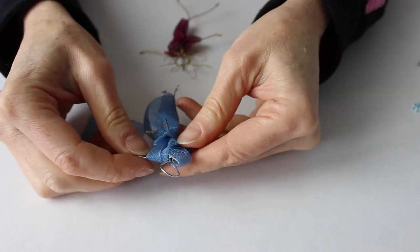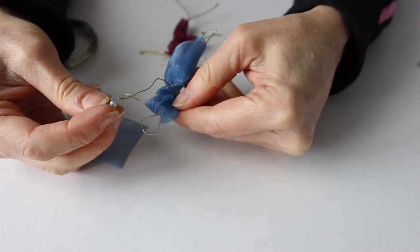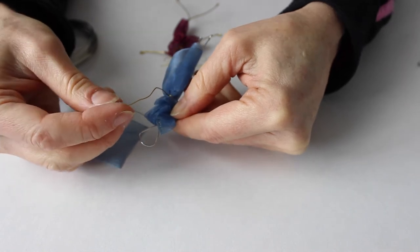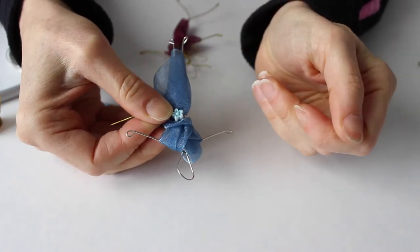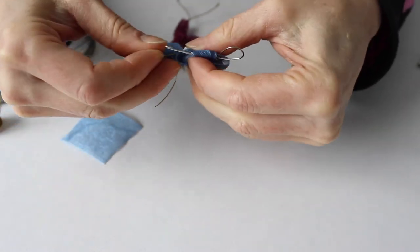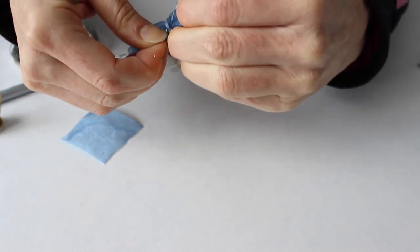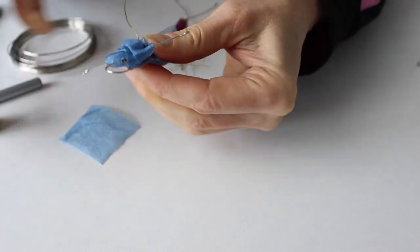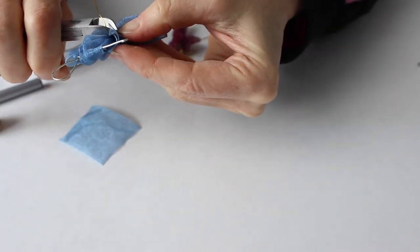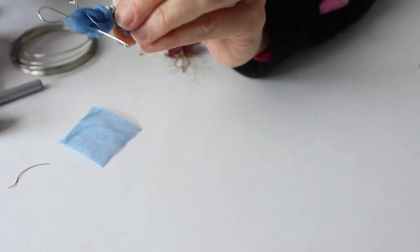At this point if you want you can put a little bead in there. I have a little flower bead, so I'm just going to stick it on the wire. Twist it around a couple more times, and then trim it. There's the little girl with her dress.